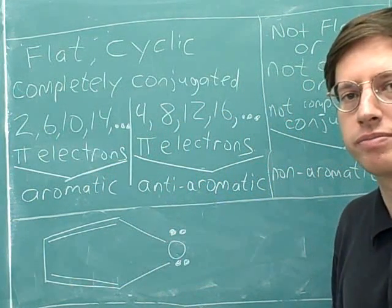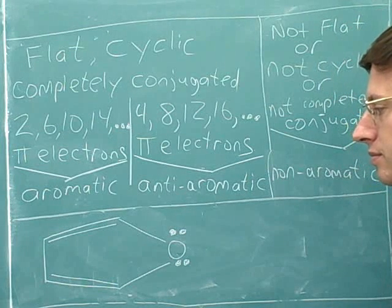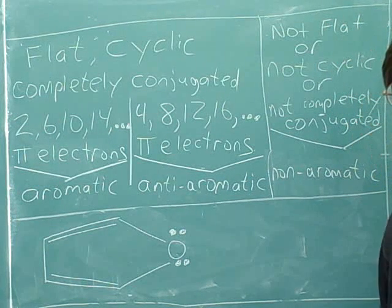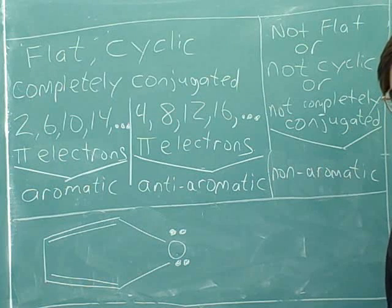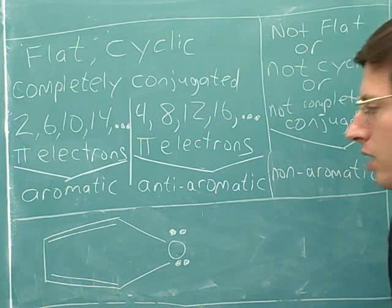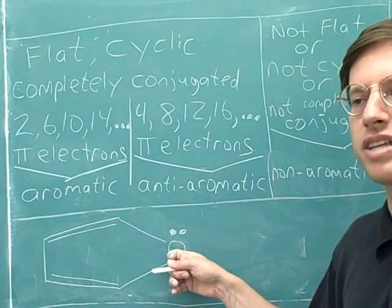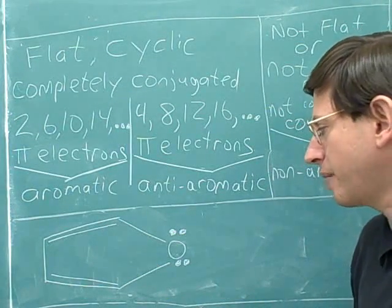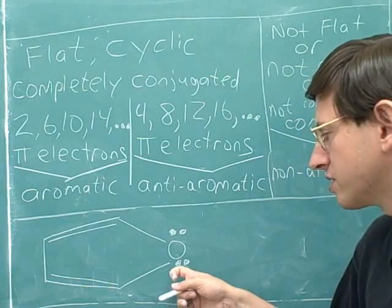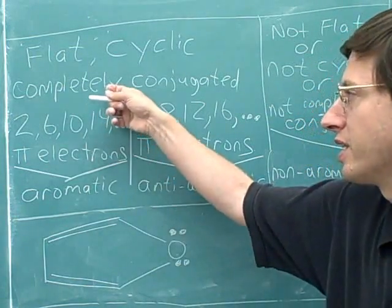What category is this molecule in? Take your time and give it some thought. It is completely conjugated because this atom at the right is sp2 — it has a lone pair and it's connected to an sp2, so using the exception we've learned about, this is also an sp2 hybridized atom. All the atoms are sp2, so we're completely conjugated.